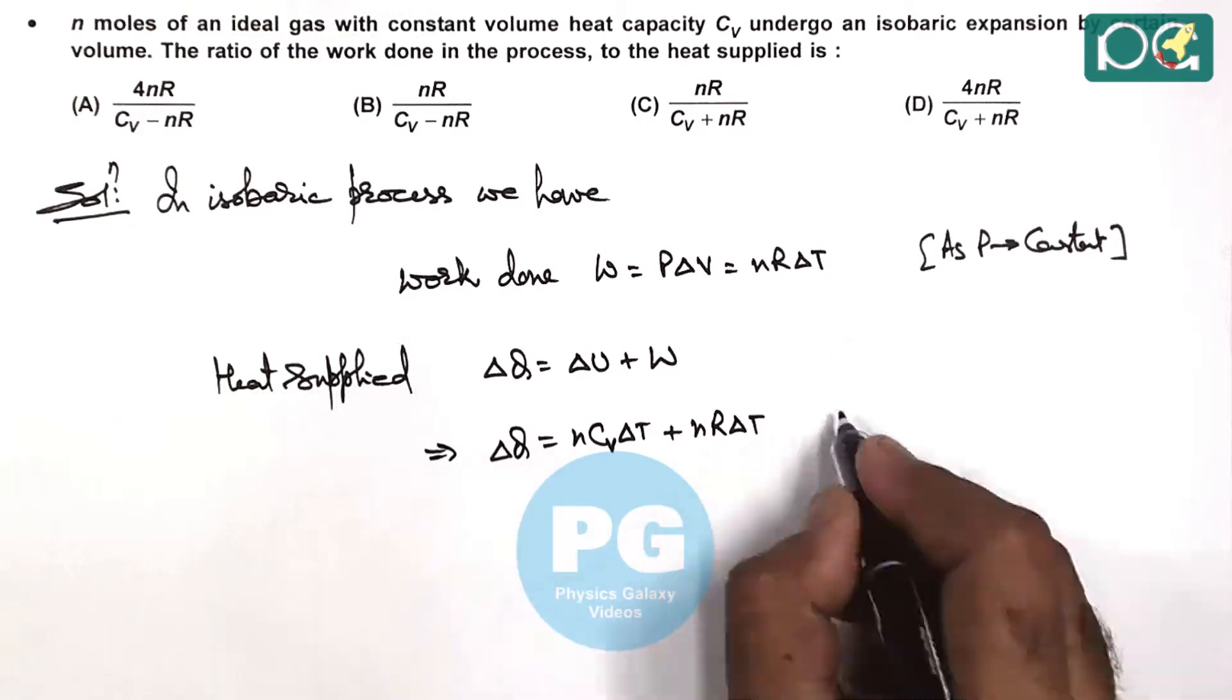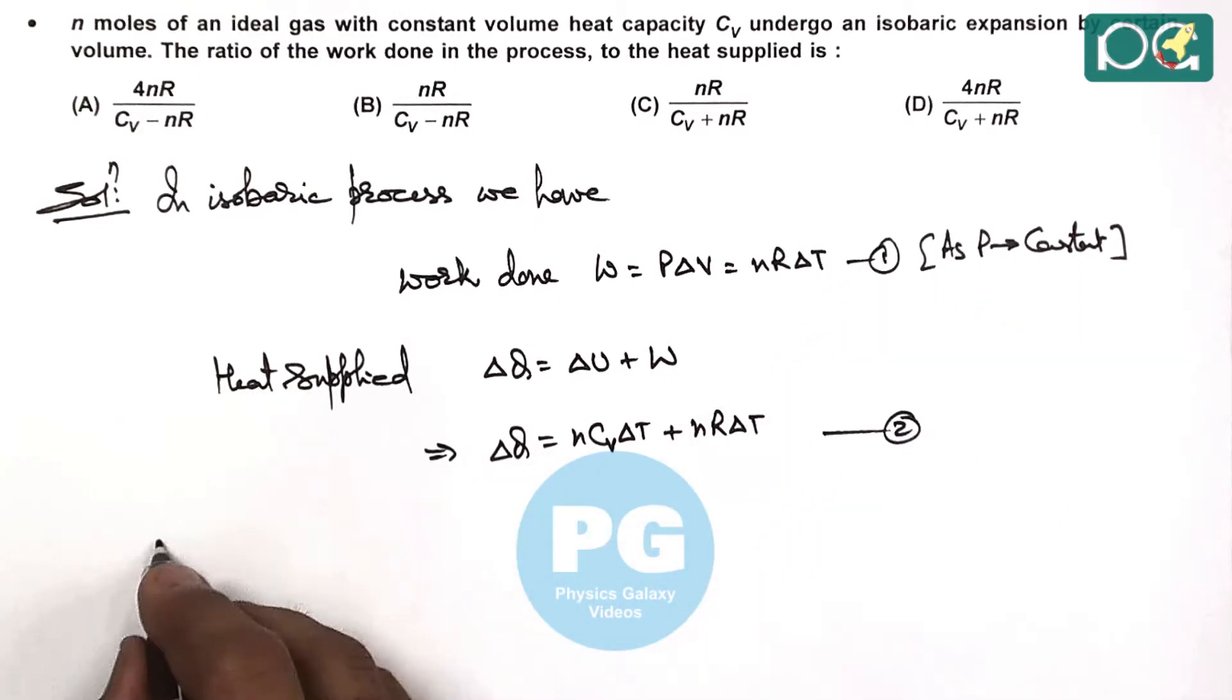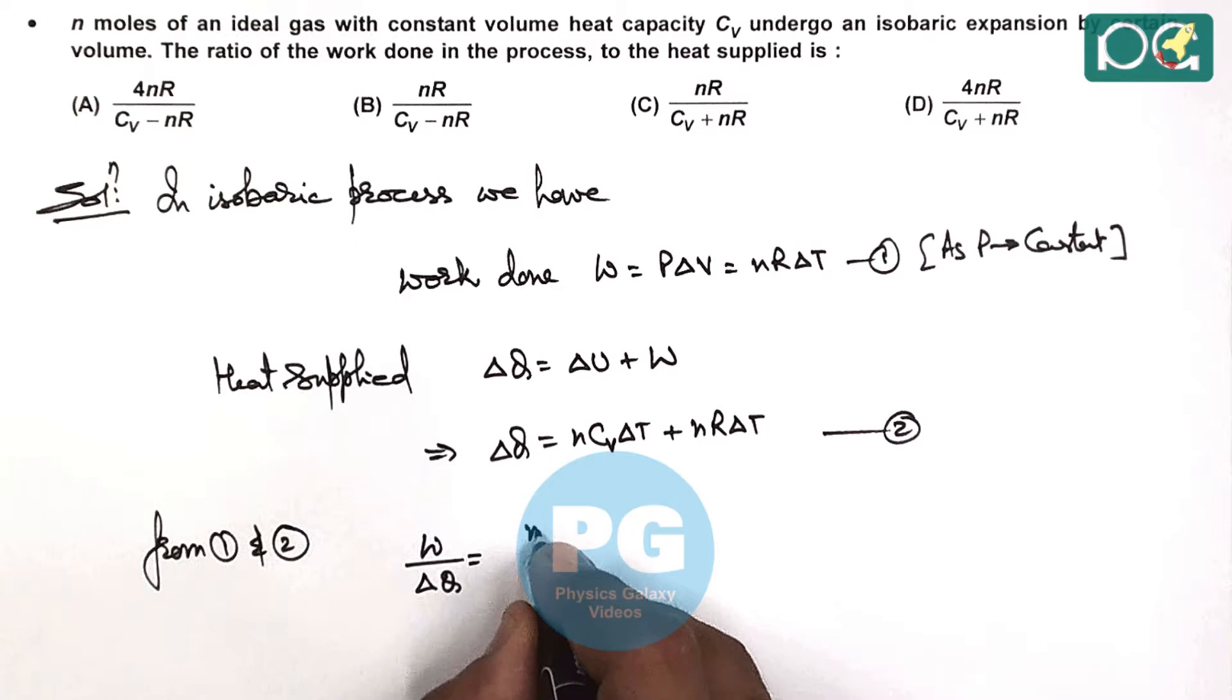So ∆Q, this is equation two, and from equations one and two, if we are required to calculate the ratio of work to heat supplied, it is W/∆Q. This is nR∆T divided by nCv∆T plus nR∆T.